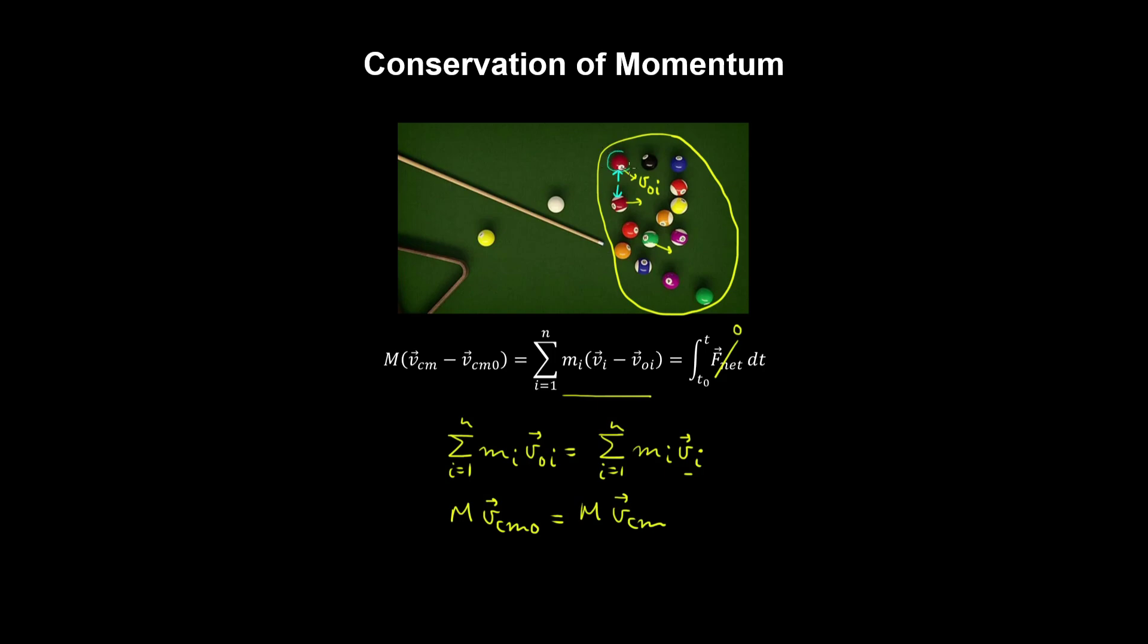But if we isolate a specific mass, then momentum is not conserved for this individual mass, because you're going to have that internal impulse generated by that internal force.